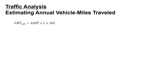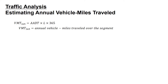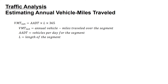We're going to look into traffic analysis: the equation for estimating annual vehicle miles traveled. The equation is VMT equals AADT times the length L times 365, where 365 is the number of days in a year. VMT sub 365 is the annual vehicle miles traveled over the segment, AADT is the vehicles per day for the segment, and L is the length of the segment.